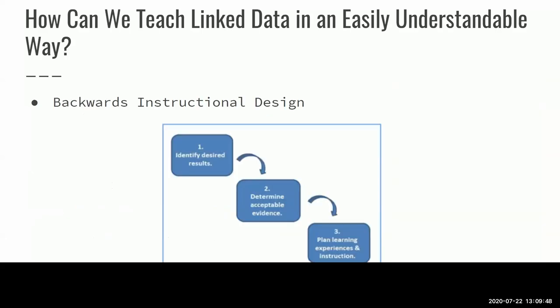One way to help balance cognitive load is an instructional design theory known as backwards instructional design. This approach asks that you start your instructional design backwards and think about the outcomes you want first before planning out the 'how' of your session. This goes hand in hand with thinking about your audience and what they need to know, and then you can build your lesson from there. If what you're planning is internal to your institution, it can be good to discuss with senior leadership as to what they believe are good outcomes. It can also help you balance cognitive load by forcing you to ask yourself what learning objectives you need to get across to this specific audience, and then plan your lesson around them, cutting out extraneous content.